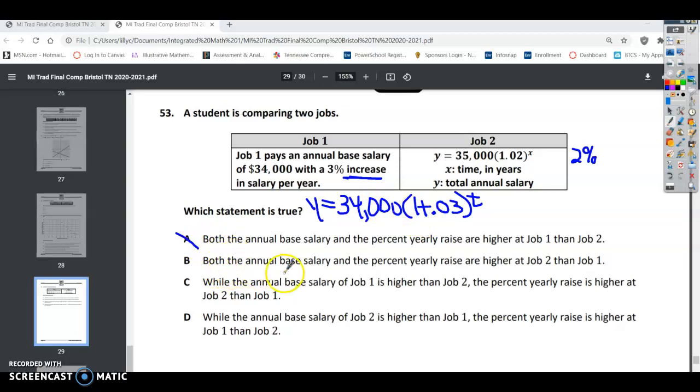Both the annual base salary and the percent yearly raise are higher at job 2. Job 2 has a base rate that is higher, $35,000. It's higher than 34, but 2% is lower than 3%, so that one is not correct as well.